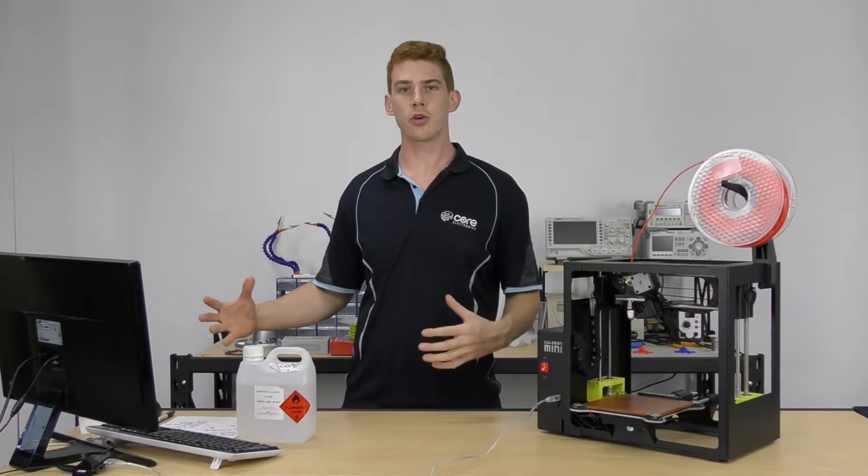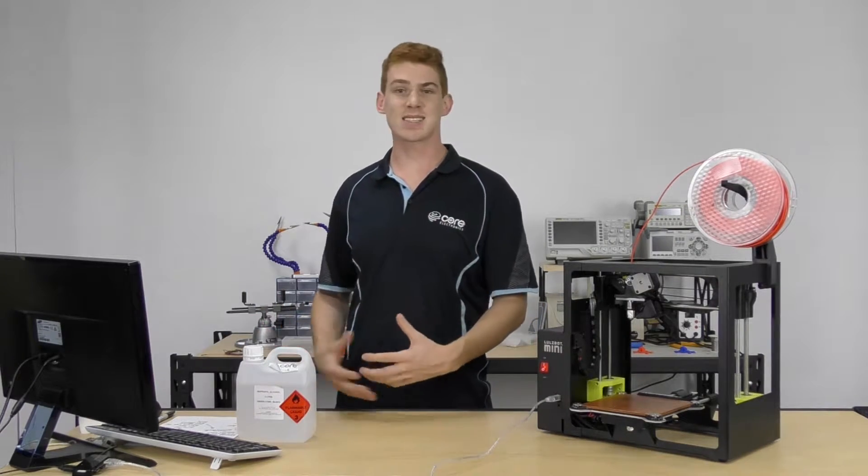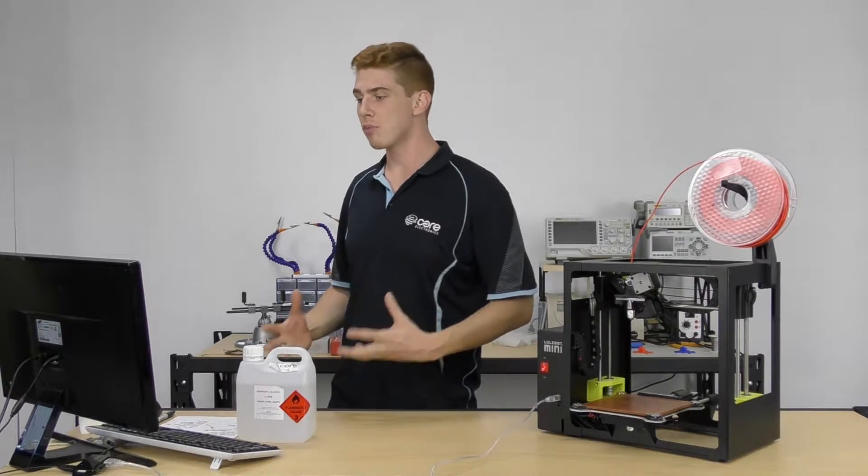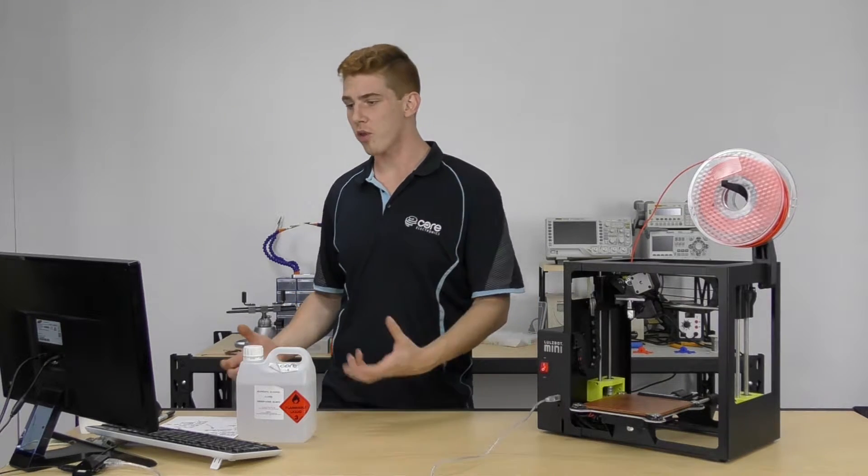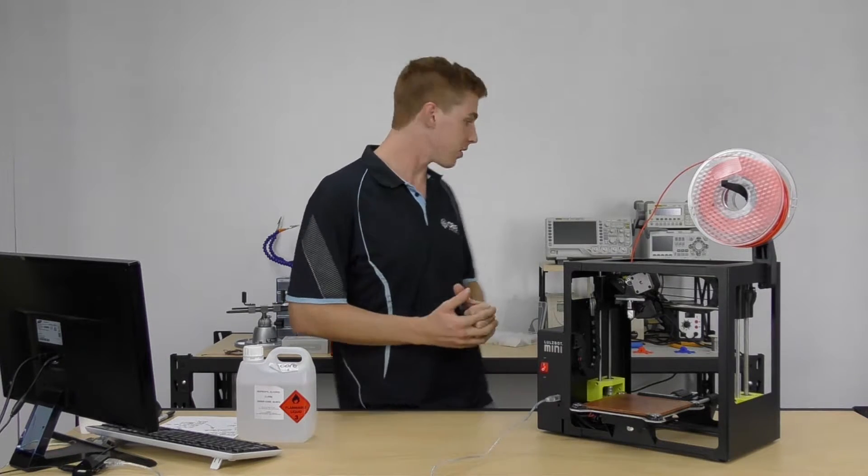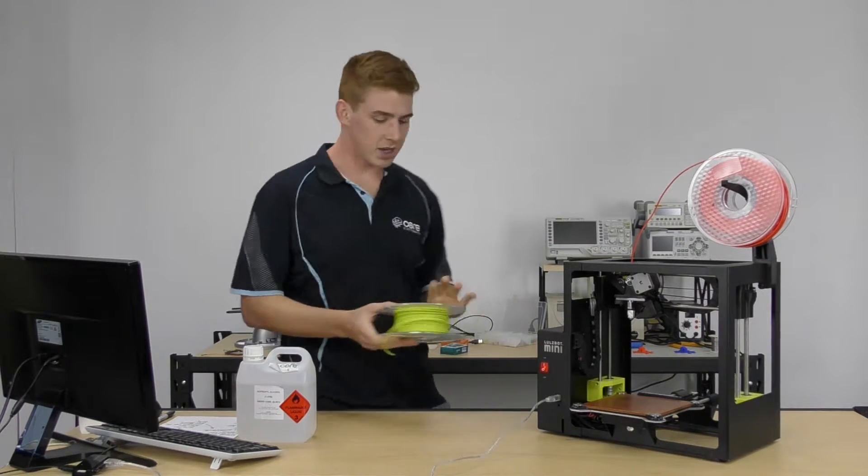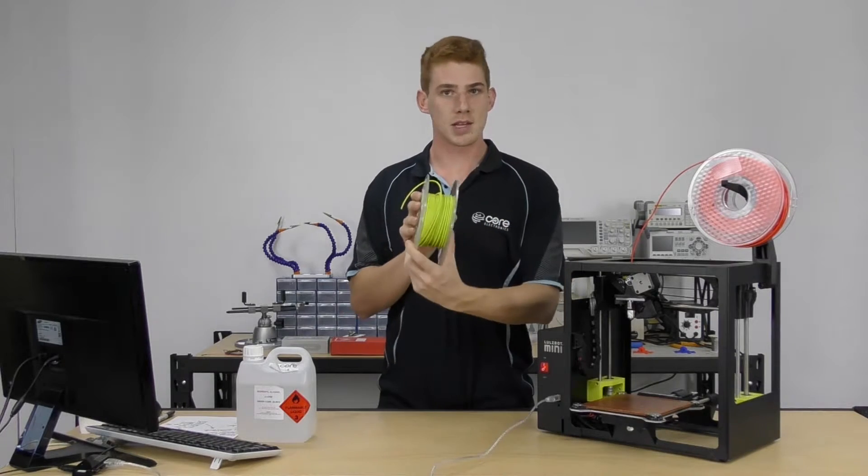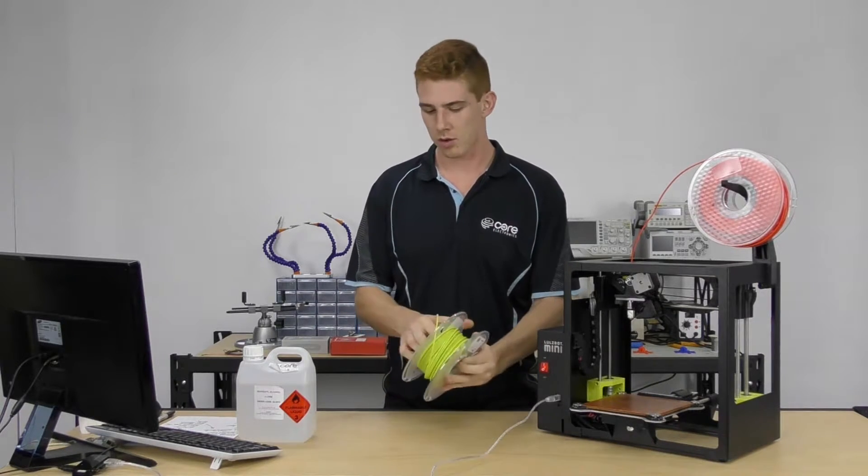All right guys, so we've gone through Cura, looked at the basic settings and advanced settings, and we're pretty much ready to print. I've got that standard profile selected for the PLA Polylite material which I have here in the Lulzbot green, so we'll get a cool looking Roctopus print off the bed.